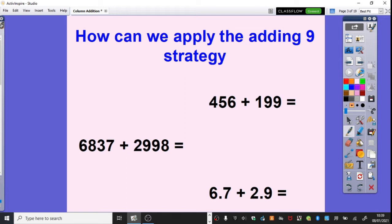Just a quick recap then, we've got 456 add 199. We obviously know that this is close to 200. So we can do 456 add 200, which gives us a total of 656.